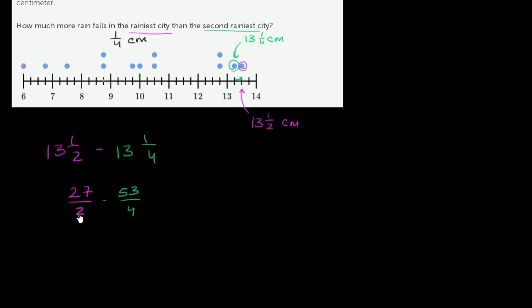And so 4 is a multiple of 2. So we just have to multiply the numerator and denominator here by 2. So we have 54 over 4 minus 53 over 4, which is equal to, well, 54 minus 53 is 1 over 4, 1/4 of a centimeter.